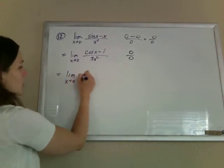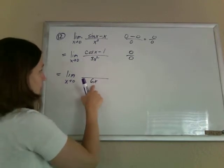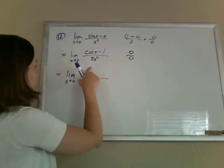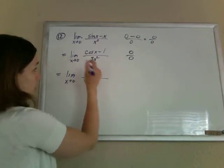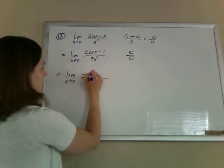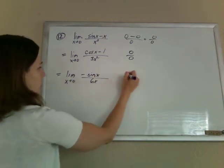And fortunately, we can see that we are getting somewhere, because the bottom keeps getting smaller power. So eventually, this is going to be okay, maybe even now. So the derivative of the bottom is 6x, the derivative of the top is negative sine x. And we plug in 0 again, sine of 0 is 0.